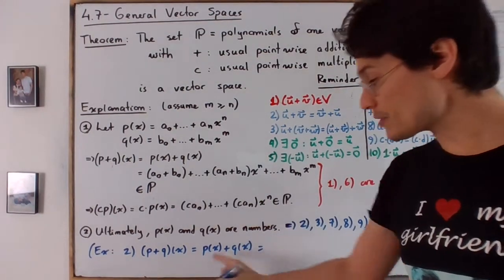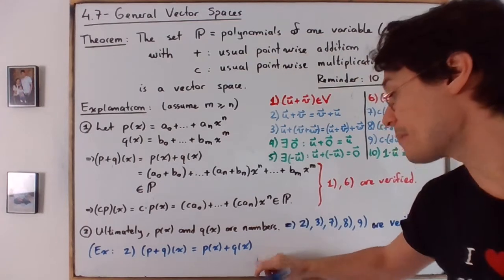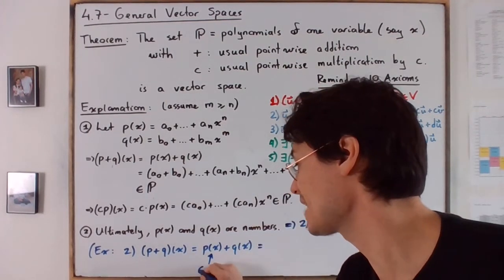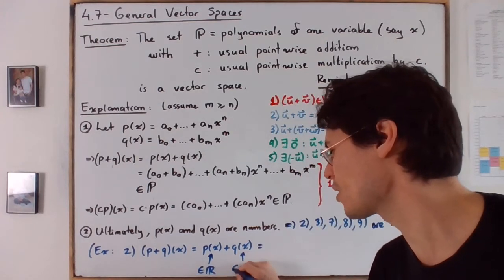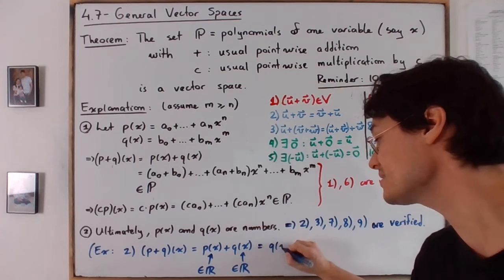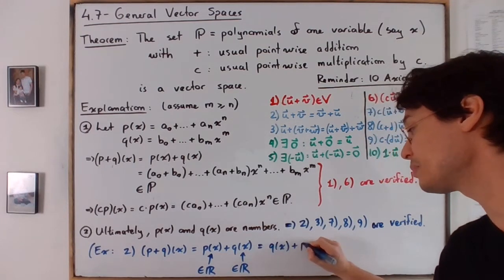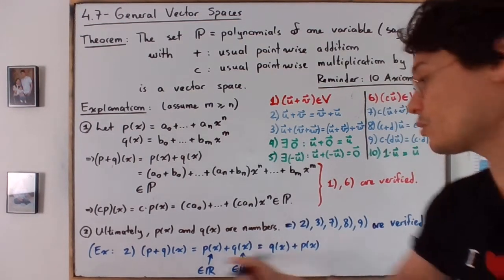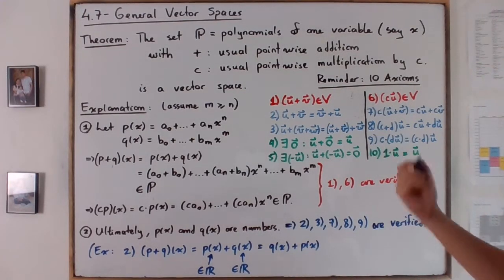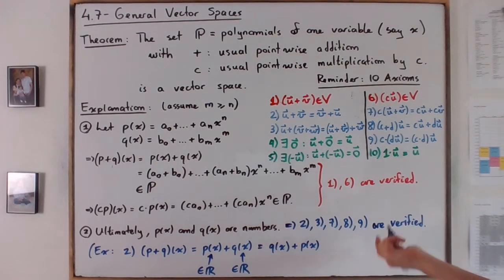So the way you would prove it is you would have like p of q of x. Then you would say this is p of x plus q of x. And then you would say, okay, since these are numbers, so this is like a real number, and this is also a real number, then you can permute them. You can say, okay, this is the same thing as q of x plus p of x.